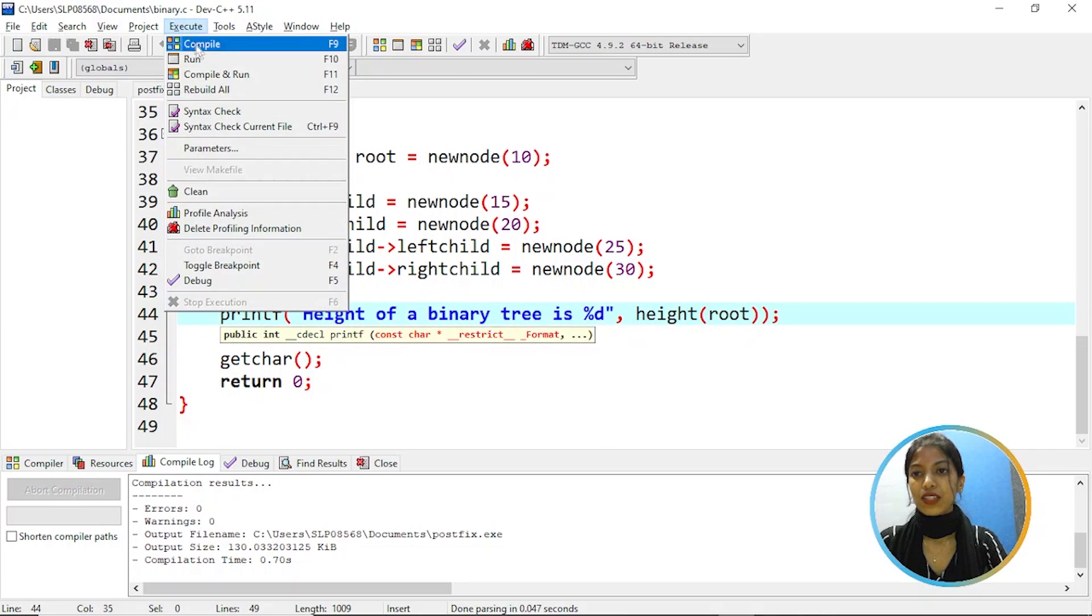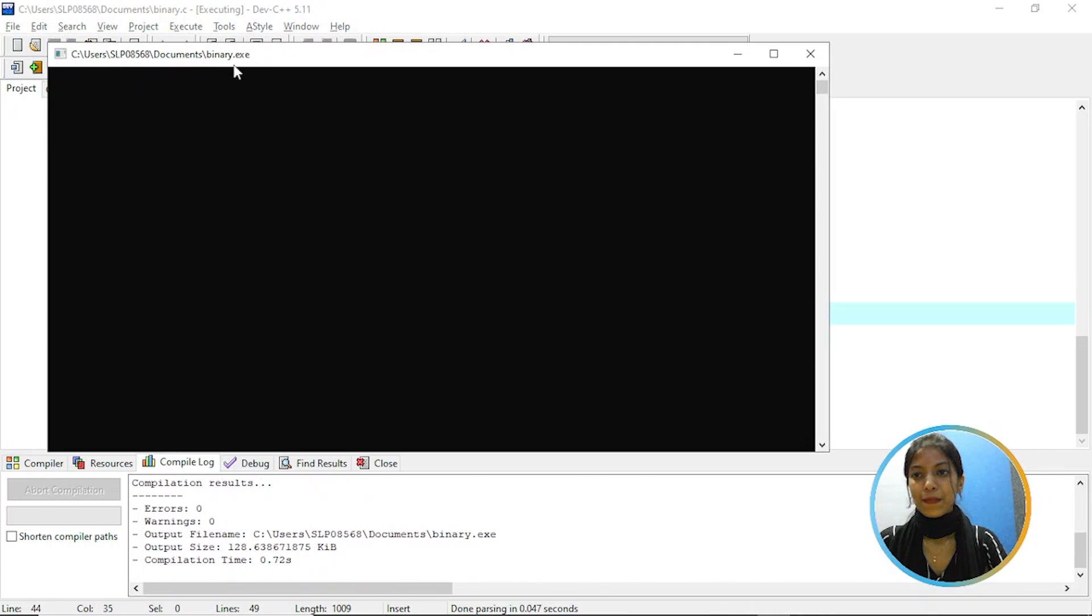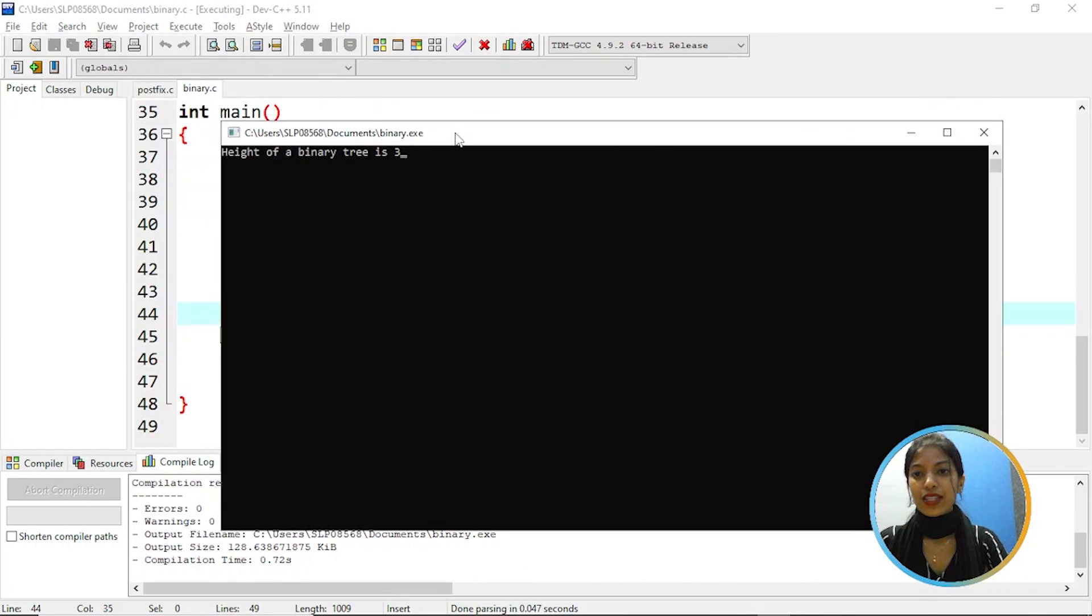So let's execute it. So as you can see we got the output the height of a binary tree is 3.